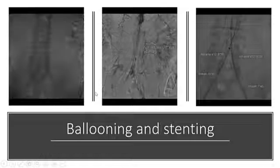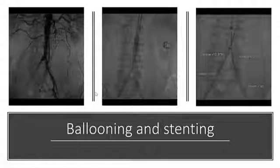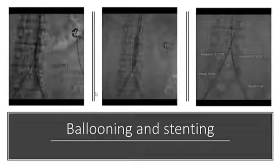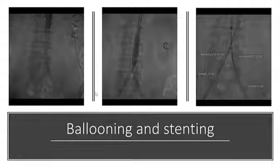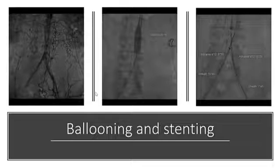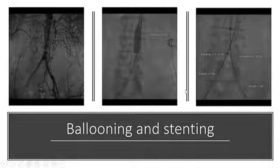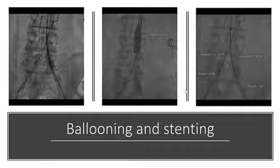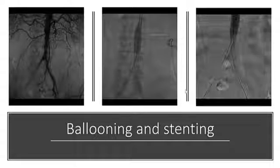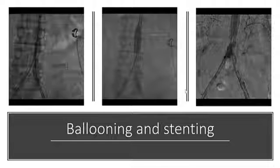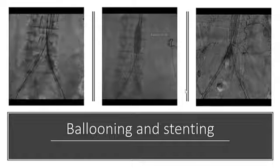Afterwards, a 12 mm Advanta V12 covered stent was placed in the infrarenal aorta, and the proximal portion of this covered stent was post-dilated with a 16 mm balloon. Then, two 8 mm and 9 mm covered stents were deployed simultaneously proximal within the infrarenal aortic covered stent and extended into the common iliac arteries.